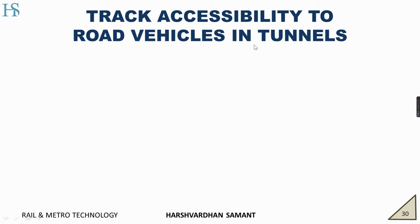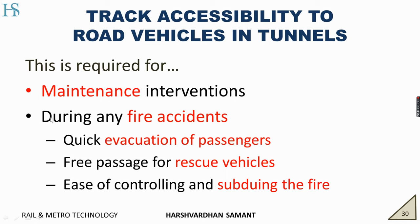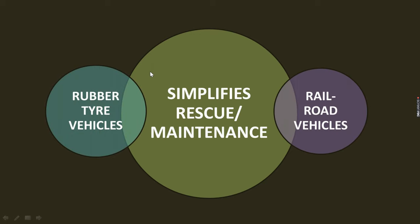Direct accessibility to road vehicles in tunnels. This is required because the space in tunnels is very limited. We have to carry out maintenance interventions, or during a fire accident we need quick evacuation of passengers, a free passage of rescue vehicles, and ease of controlling and subduing fire. Due to space constraints in tunnels, there should be a facility for moving road vehicles inside the rail tunnels. Obviously we will have rail vehicles during accidents, but if we can also get help from normal road vehicles, it will simplify rescue and maintenance operations.